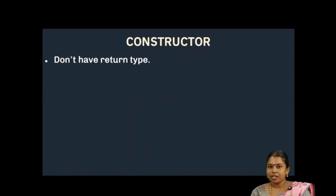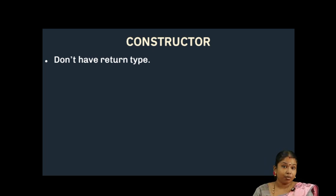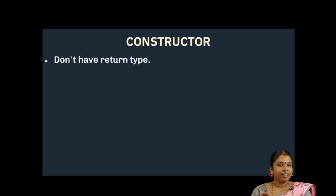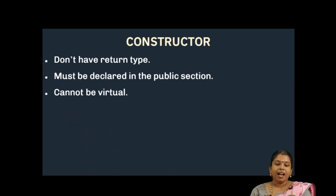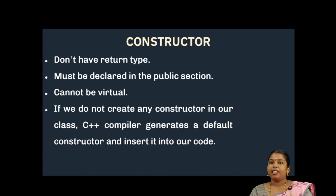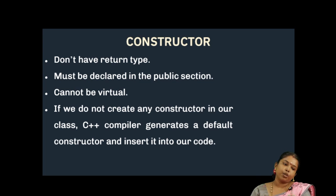Now let's see some key features about Constructor. Its name must be the same as the class name and it does not have any return type — this is a major difference between other member functions and the Constructor. It should be declared within a public section and it cannot be a virtual function. If we don't declare any Constructor in our program, the C++ compiler will automatically create a Default Constructor and insert it into our code.